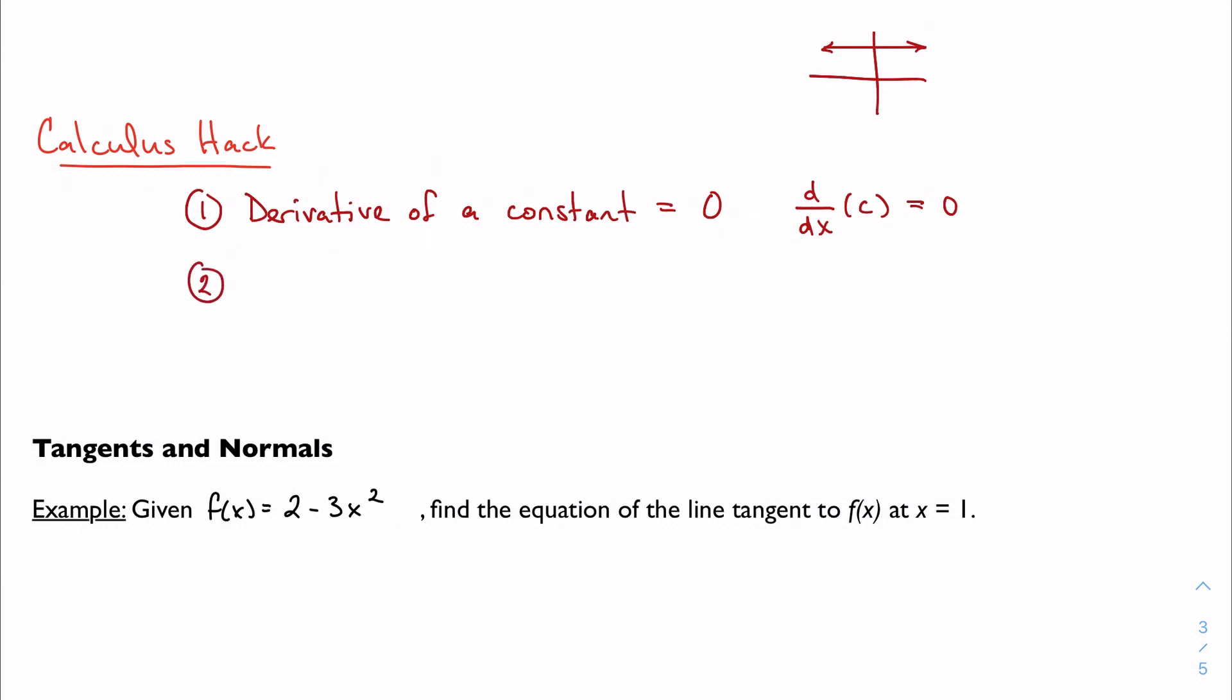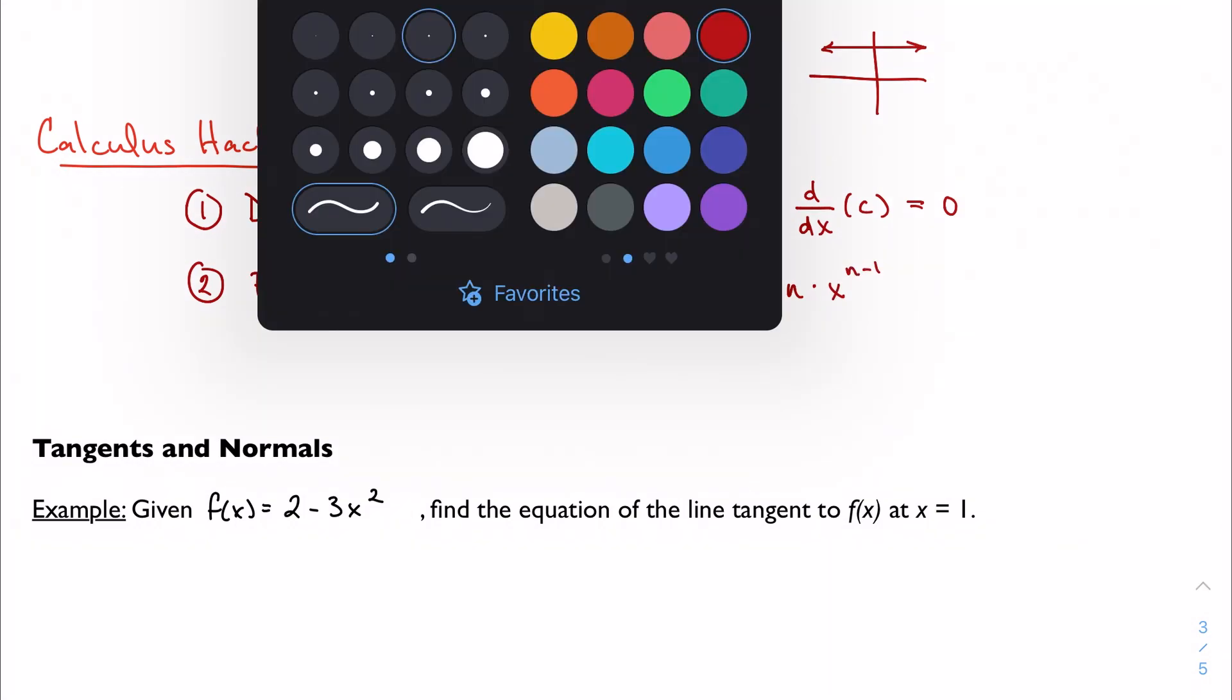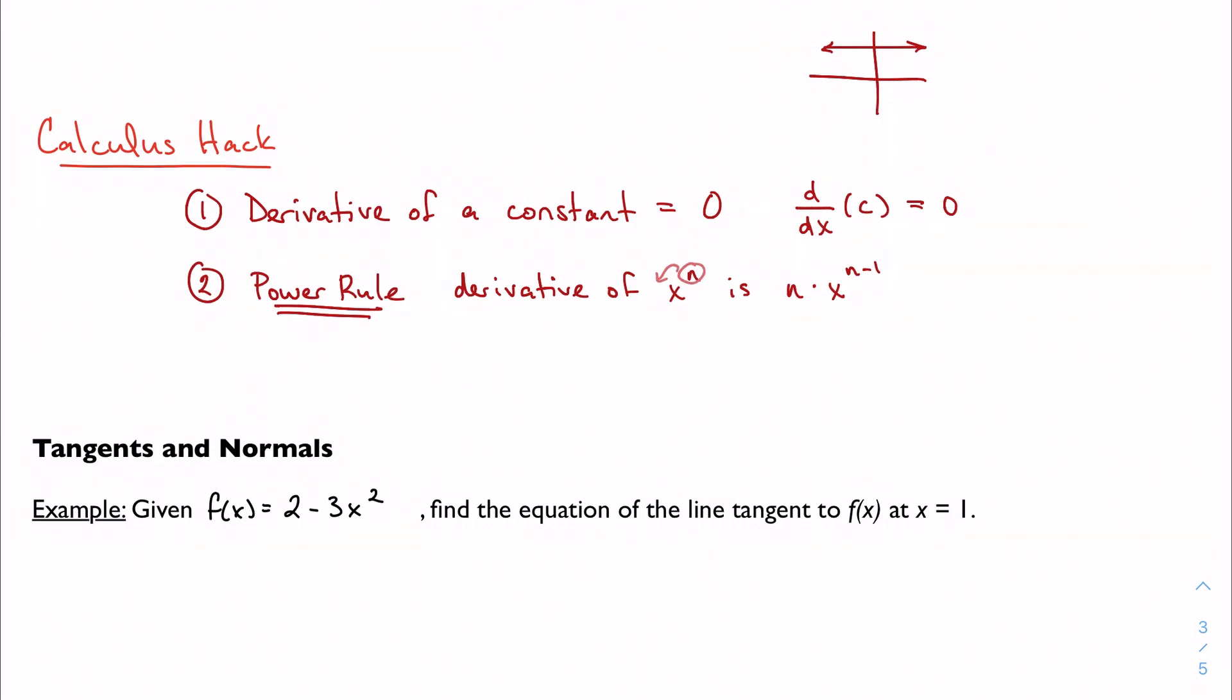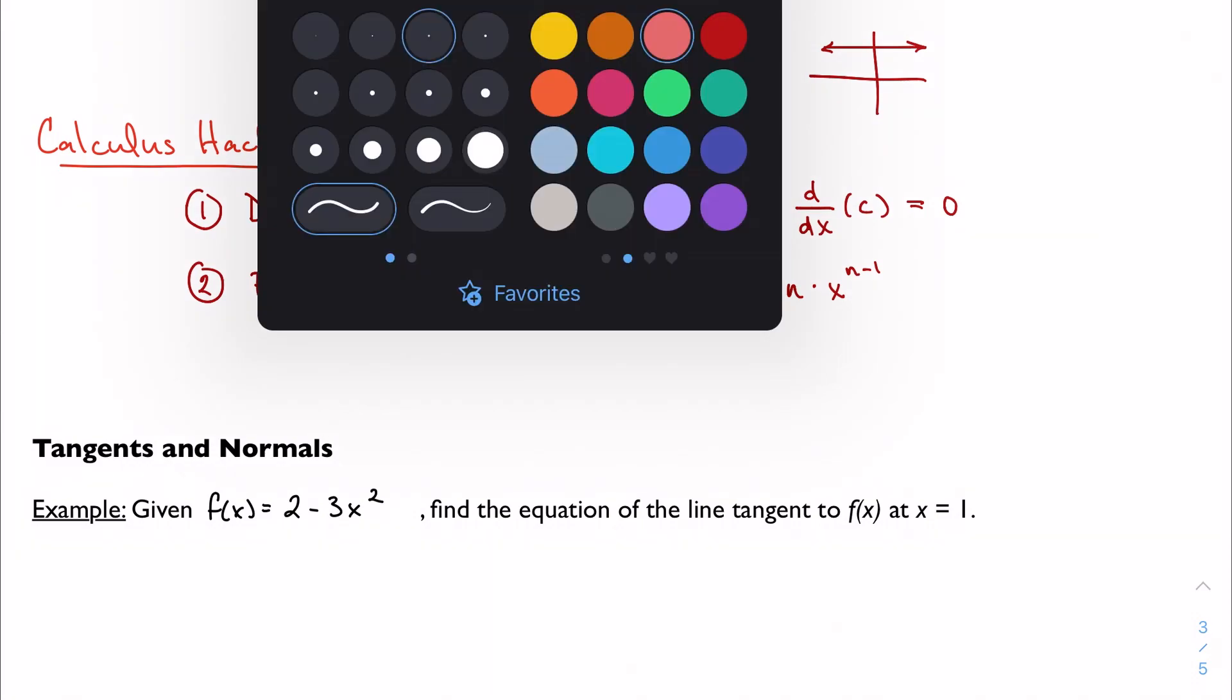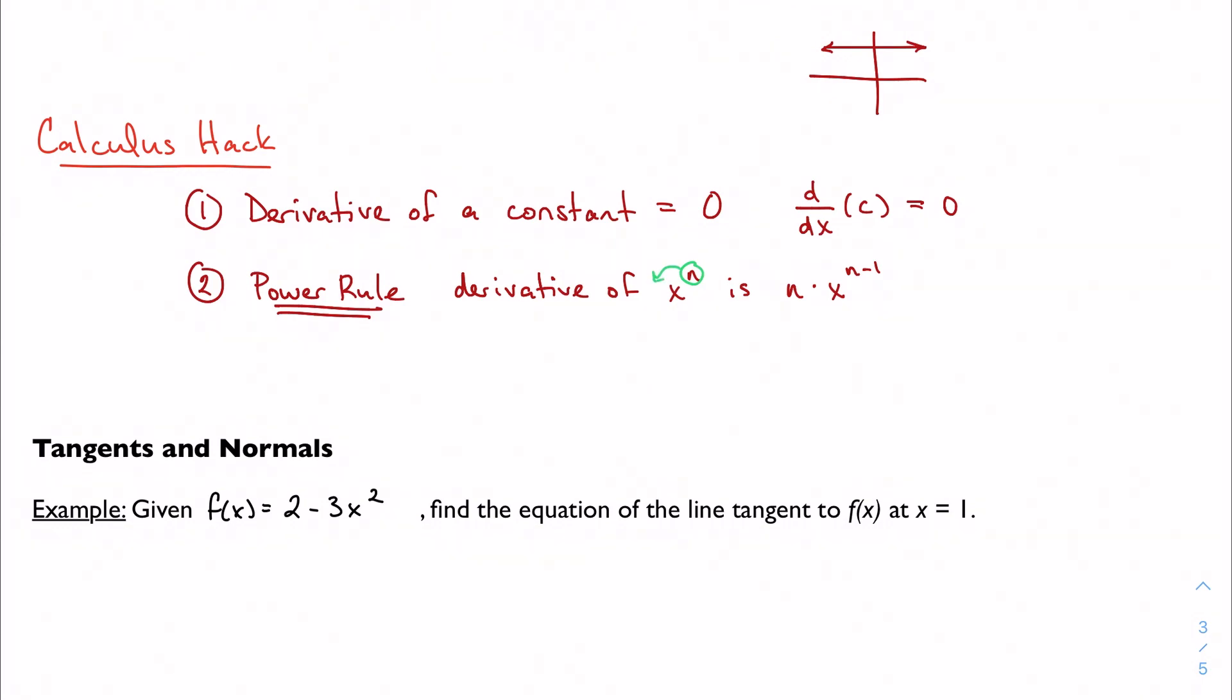The second one is what we call the power rule, and it is essential. It is an essential part of calculus. The power rule says that the derivative of anything that has a power, so anything of the form x to the n, can be expressed this way: n times x to the n minus 1. So how does this work? The power comes down and becomes a coefficient, and then I decrease the power by one.